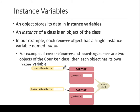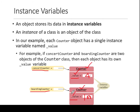Let's say we have created two objects of the same class. Counter is the class; one object is called concert counter and the other is called boarding counter. They have the same variables — in this case the variable is called value. But this value is not the same as that value, because one belongs to concert counter and one belongs to boarding counter; they may hold different numbers like four or one hundred. Same class name and variable name, but different object names, and the compiler stores them in different memory locations.